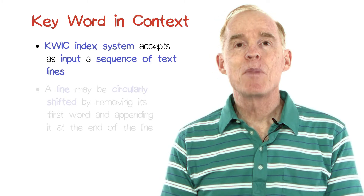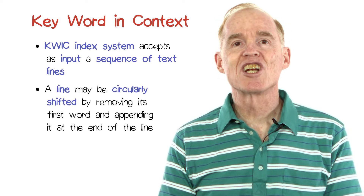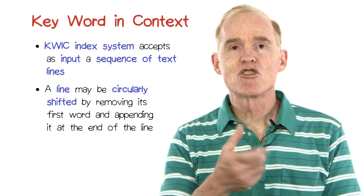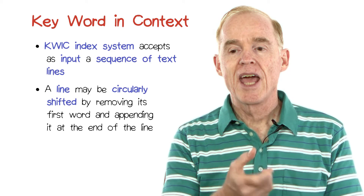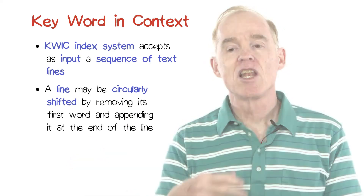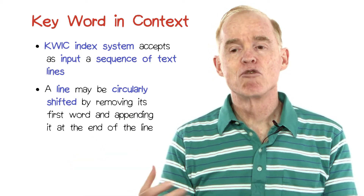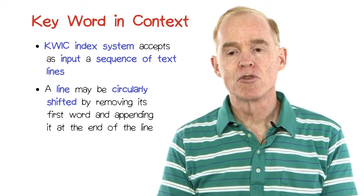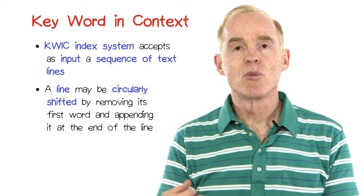A line may be circularly shifted by removing its first word and appending it to the end of the line. Thus a line consisting of four words will have four circular shifts, including the original.